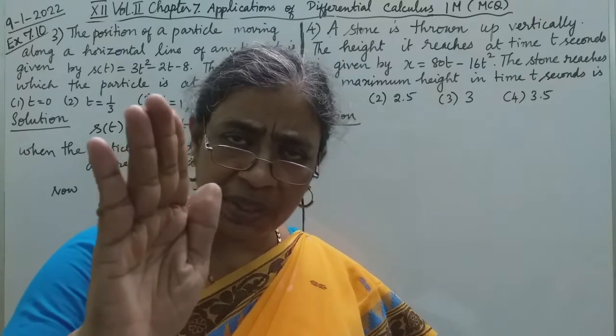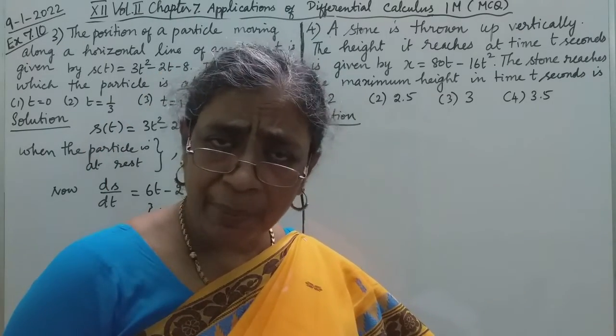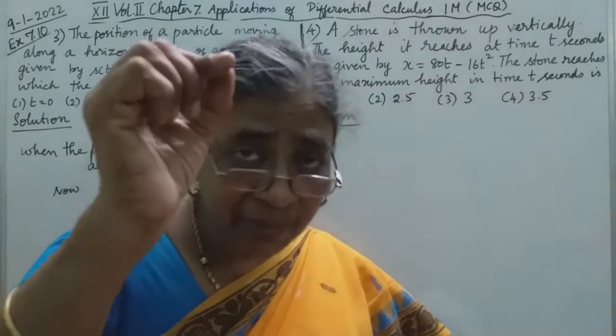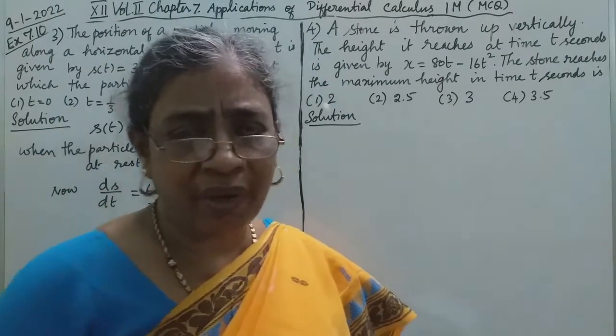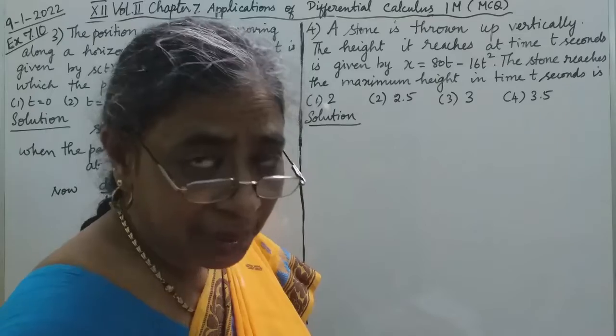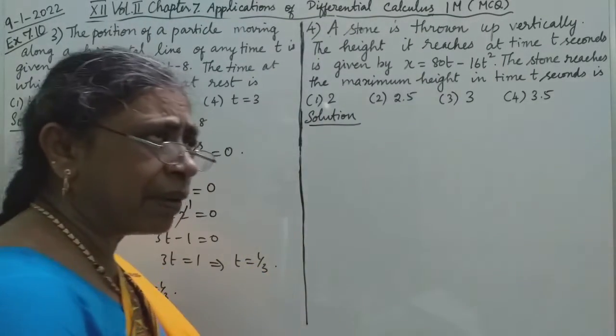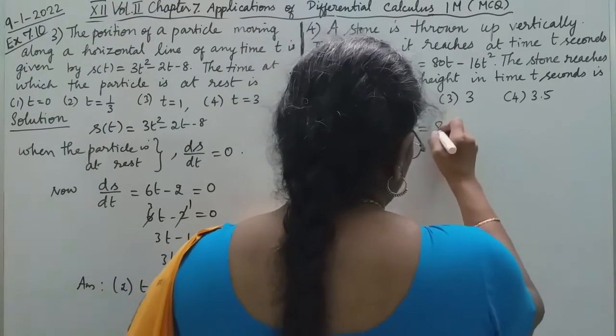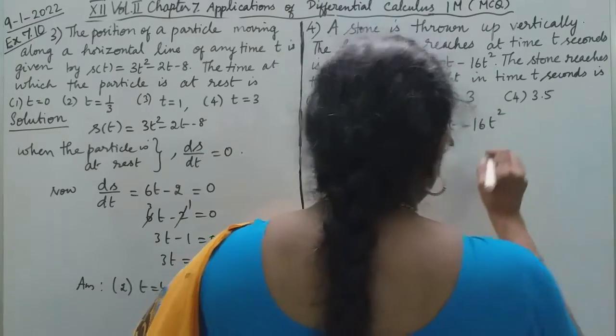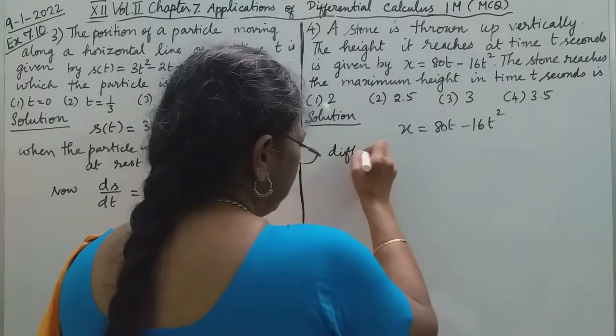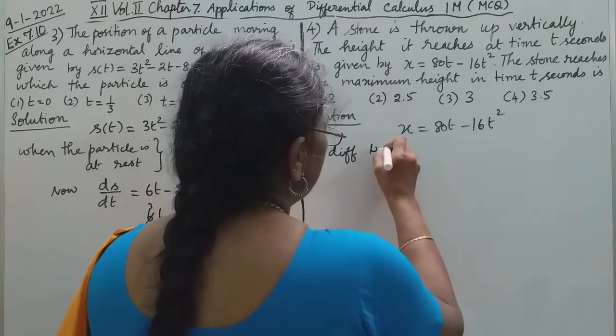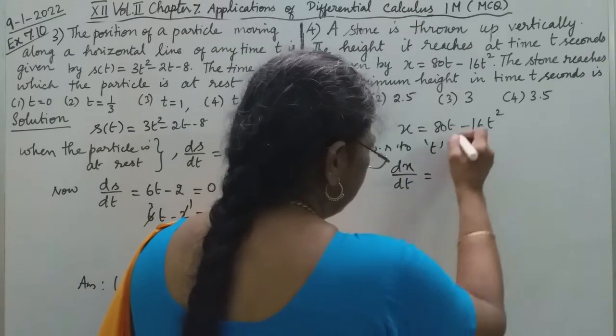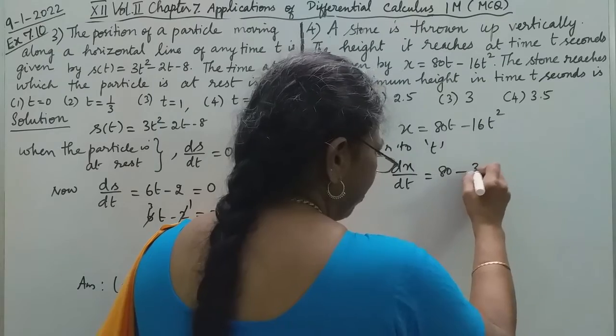When moving upwards there is velocity, downwards there is velocity, but at maximum height the velocity is zero. The height is given in terms of time t: x = 80t - 16t². Let us differentiate with respect to time t. This gives us dx/dt = 80 - 32t.